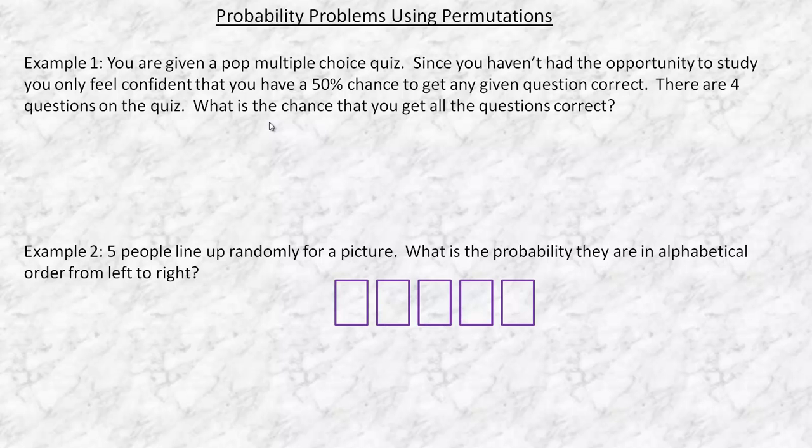You can think of each of these questions as an independent event. What you get right or wrong on the first question shouldn't have any influence on the next one. So there'd be a 0.5 or 50% chance of getting the first one correct, times 0.5 chance of getting the next one correct, times 0.5 chance of getting the third one correct, and the same with the fourth. So the calculation would actually be 0.5 to the power of 4, which is about 0.0625.